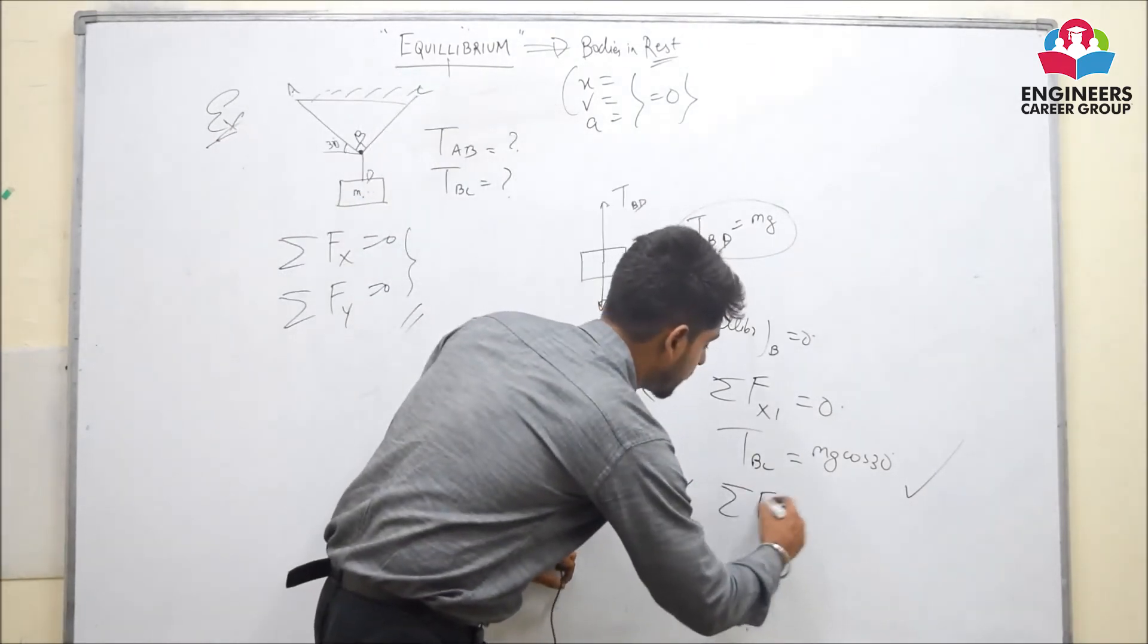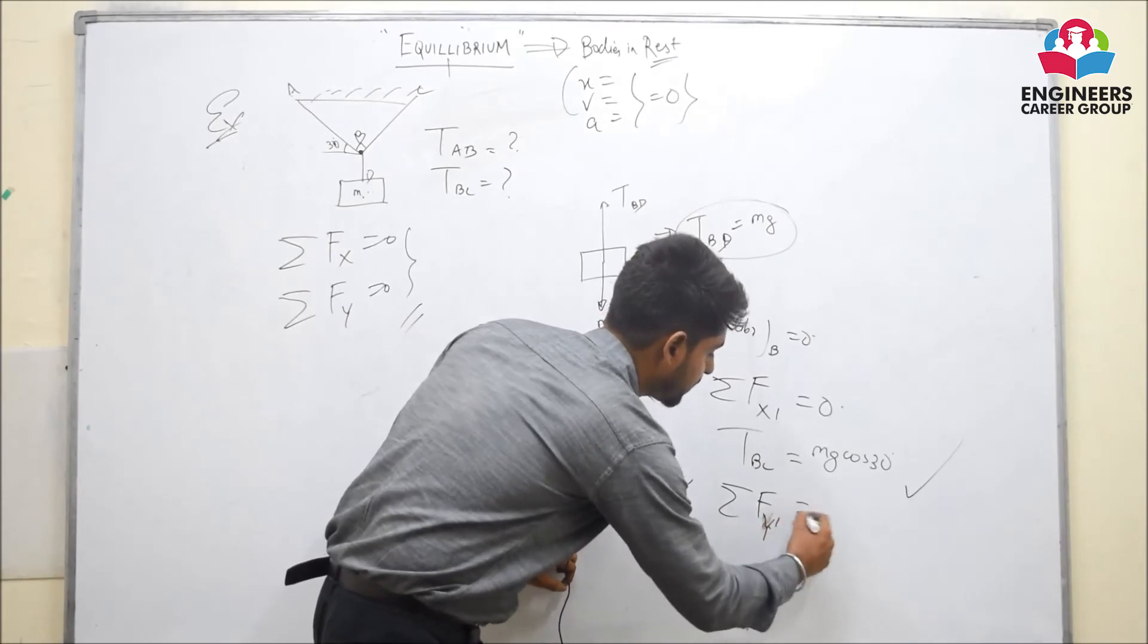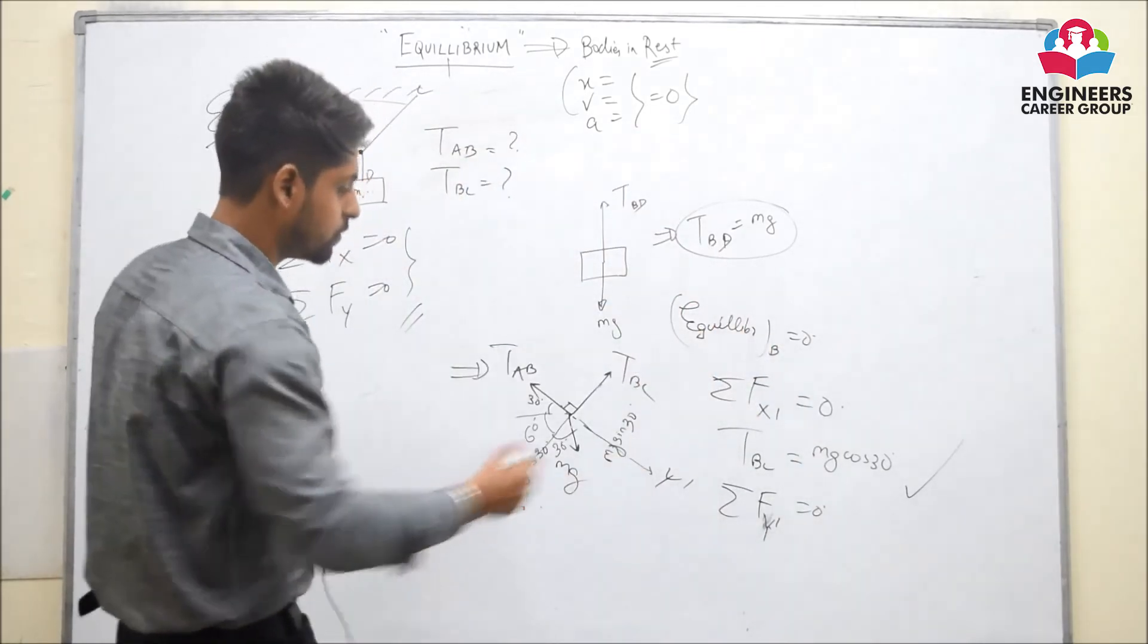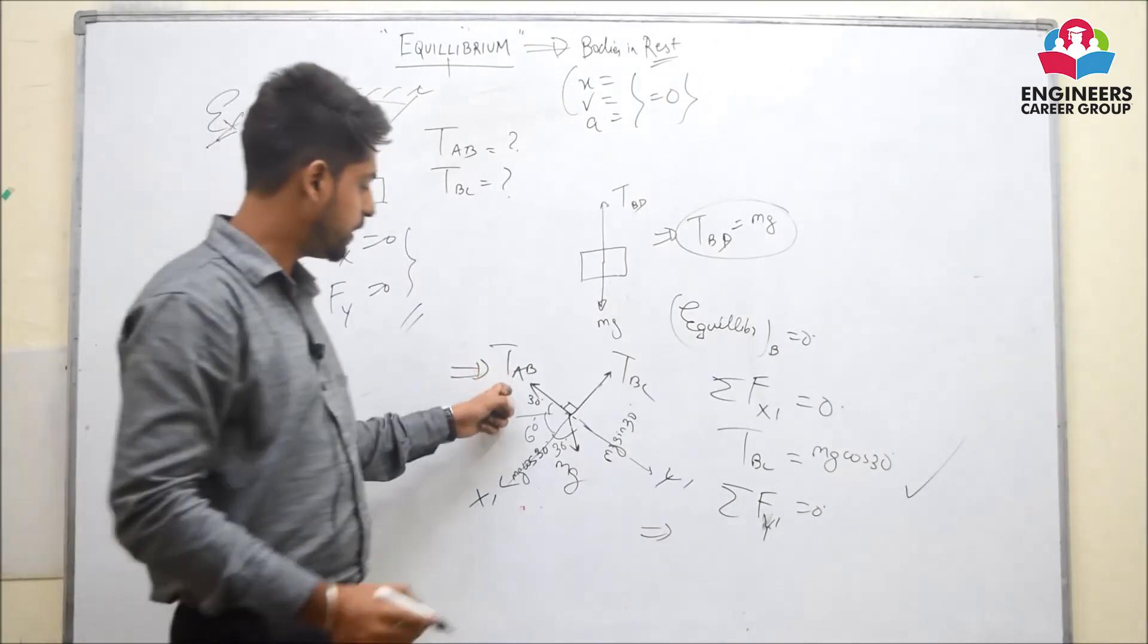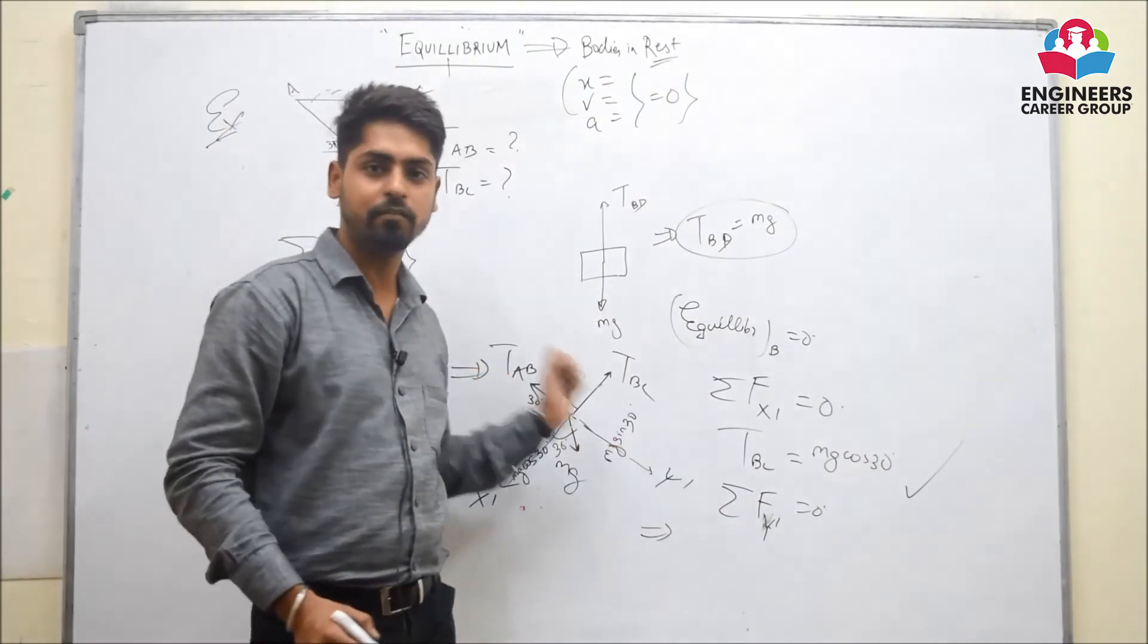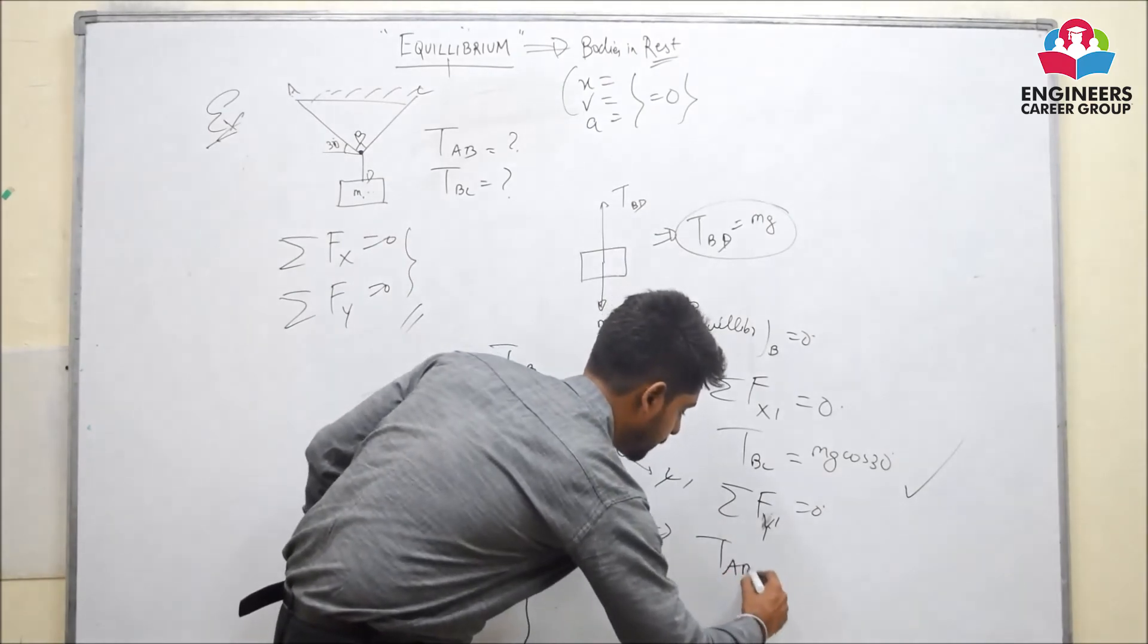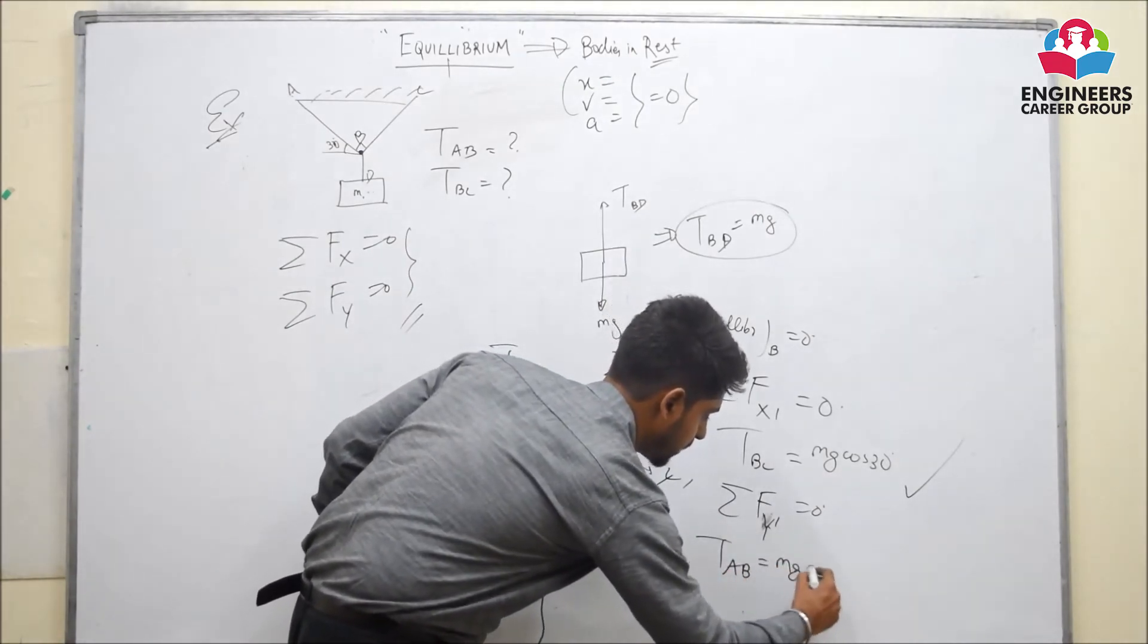Secondly, we will consider the equilibrium of forces along the second axis which is y dash axis. So, along this y dash axis, we can easily know that tension T AB and Mg sin 30 will be equal. So, T AB is equal to Mg sin 30.